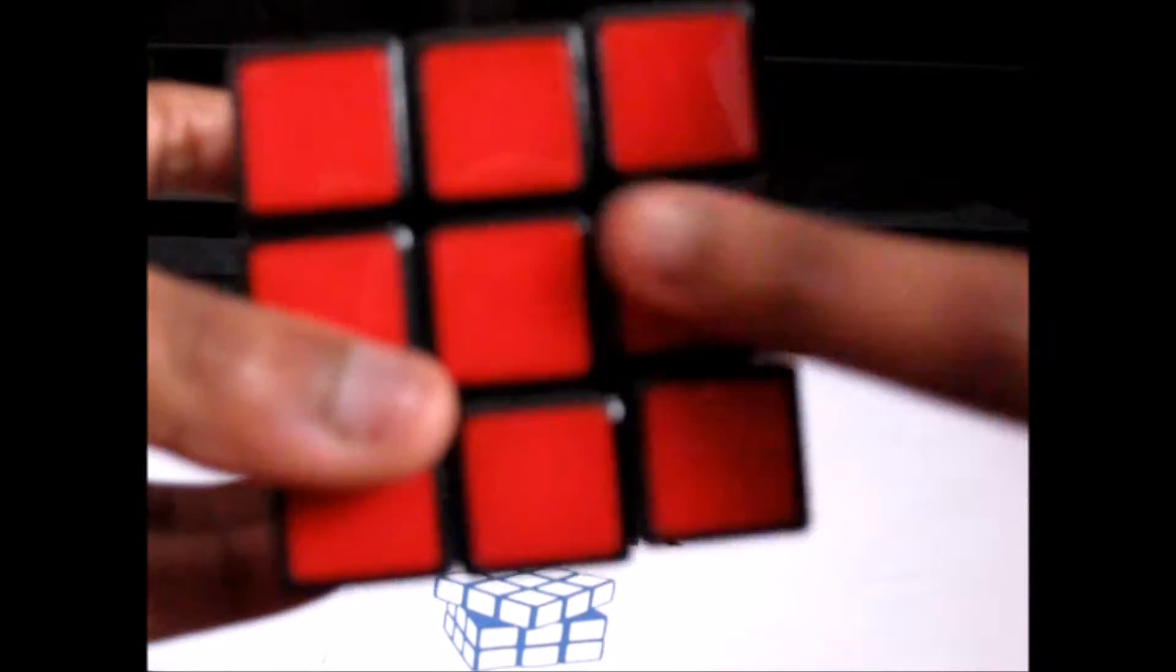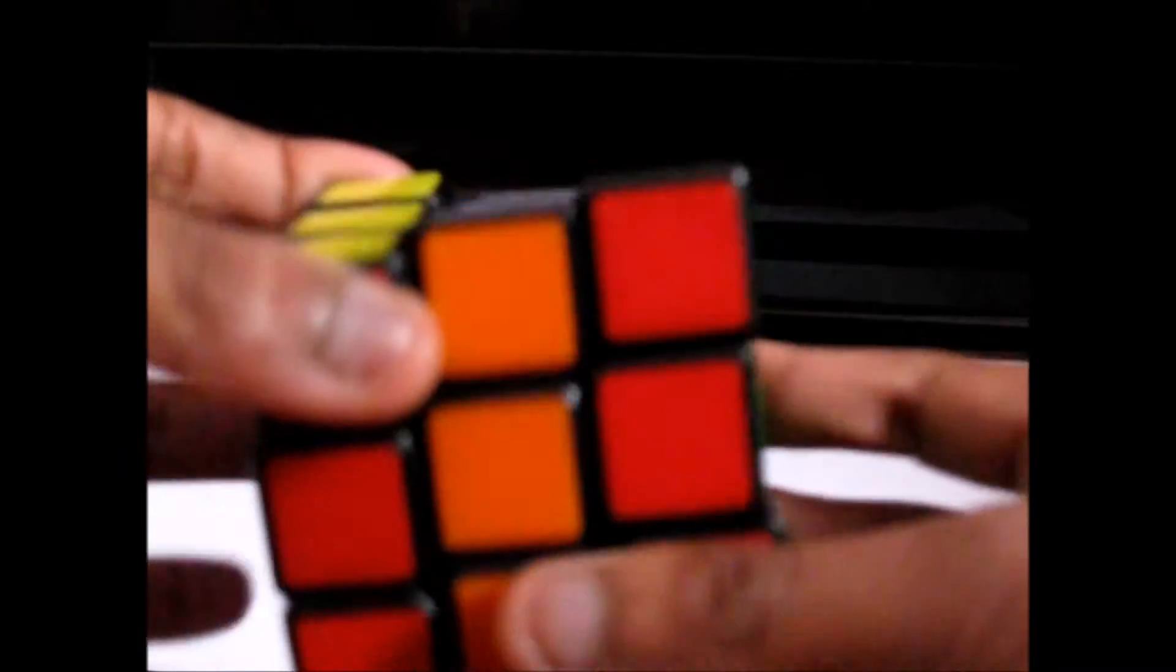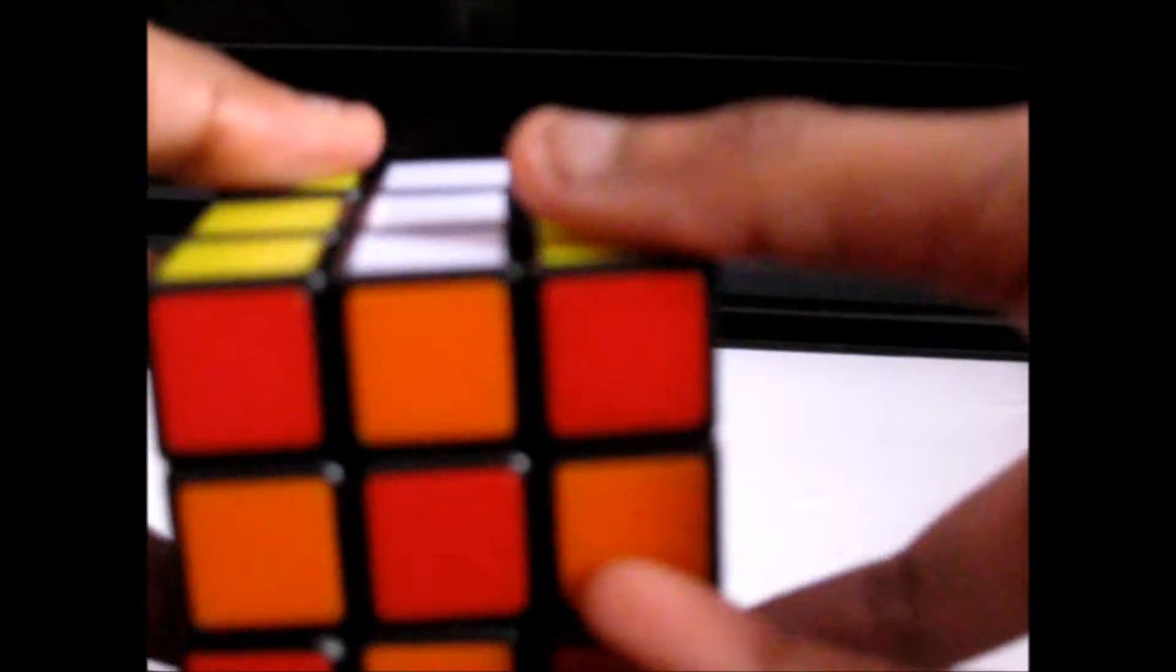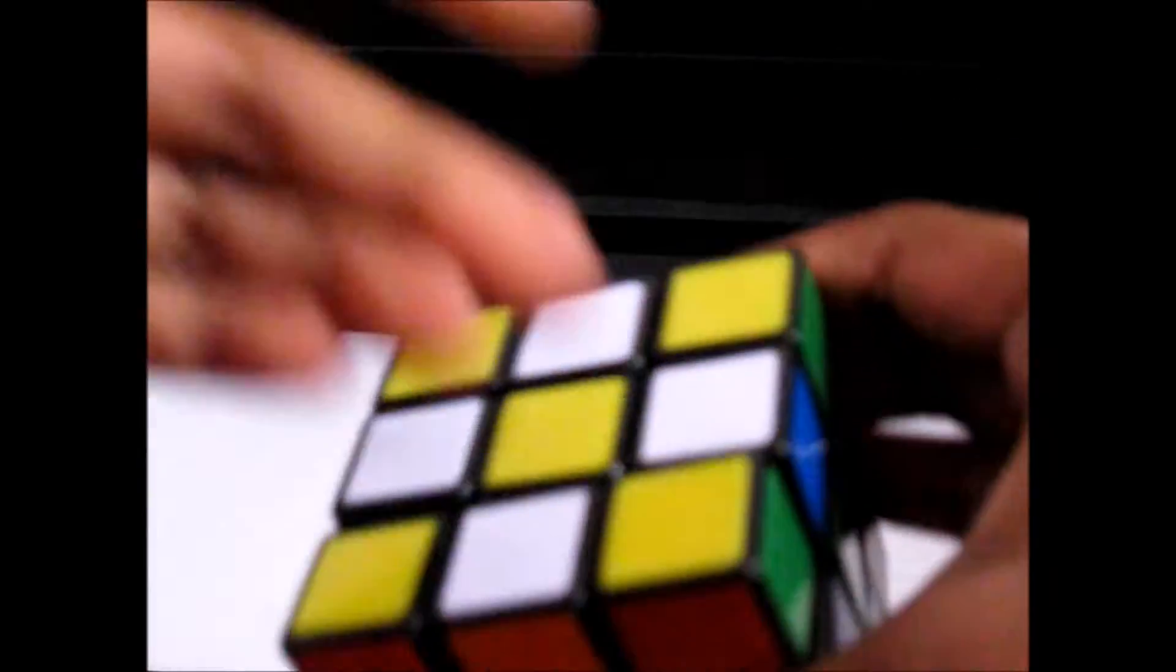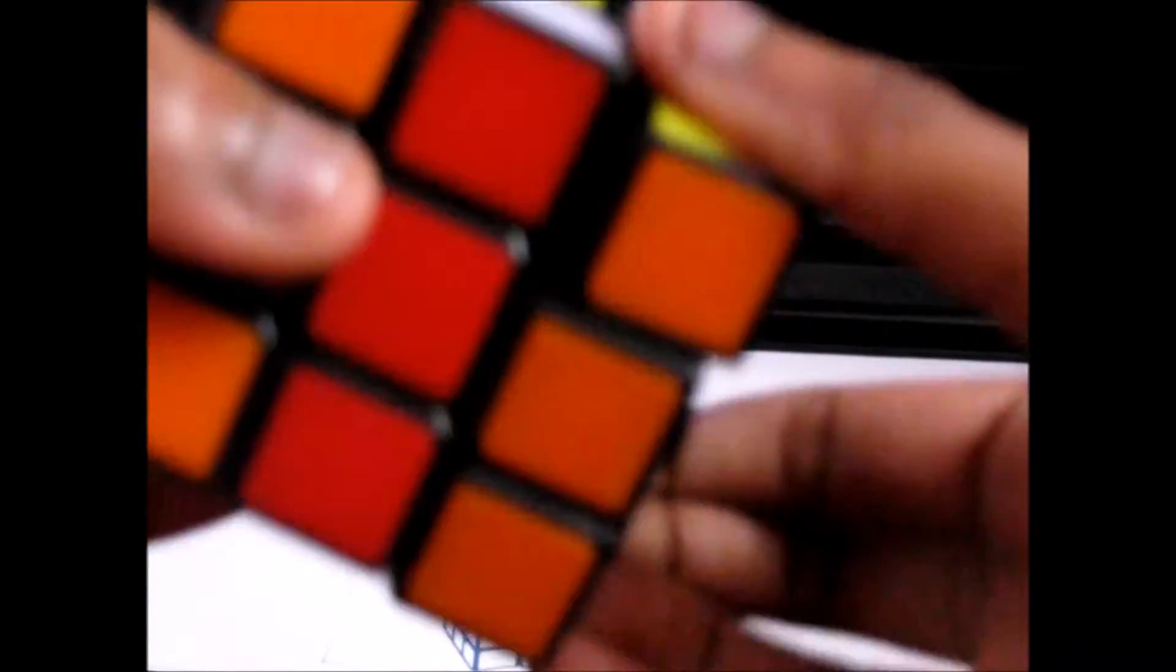So on a normal 3x3 you just turn all the middle slices two times, which would do this, or you could just turn each face two times like that which brings it back.